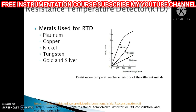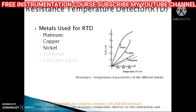Looking at the resistance-temperature characteristics, platinum has a very linear characteristic, whereas copper and nickel are completely nonlinear — that is why nickel RTDs have a very small range and are very cheap. Tungsten, represented by the red line, also has linear characteristics, but its purity is lesser than platinum and it is very brittle to work with. Gold and silver are two additional materials.